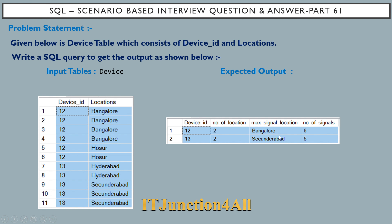For device_id 12 we have two distinct locations — Bangalore and Hosur — that's why the count is 2. For device_id 13 we again have two distinct locations. Max signal location is the location with the maximum number of occurrences for that device_id. For device_id 12, Bangalore has 4 occurrences and Hosur has 2, so Bangalore comes as the max signal location. Similarly for device_id 13, Secunderabad is the max signal location.